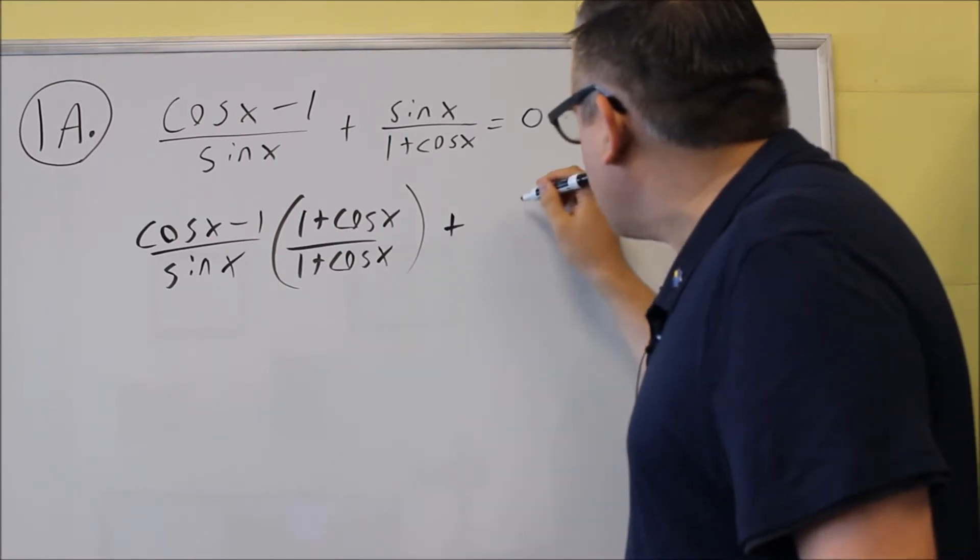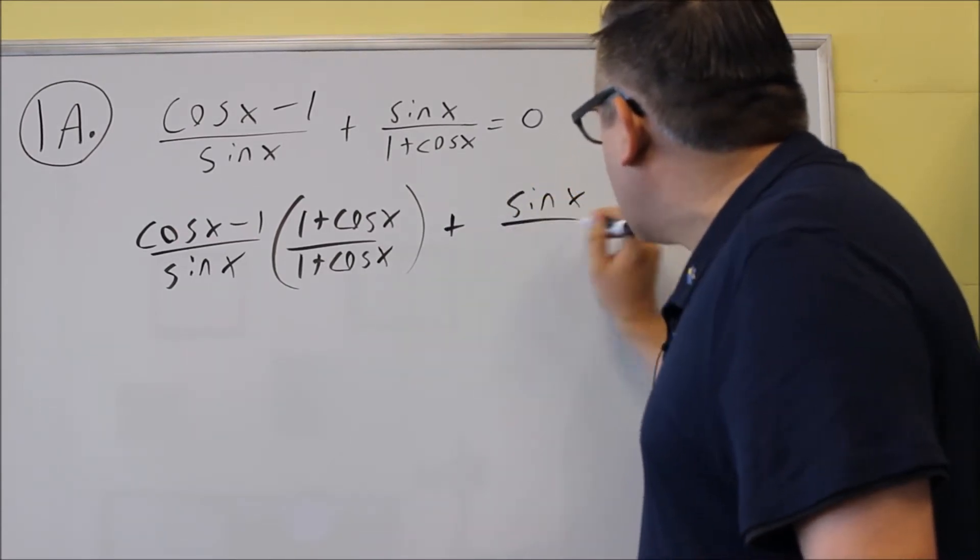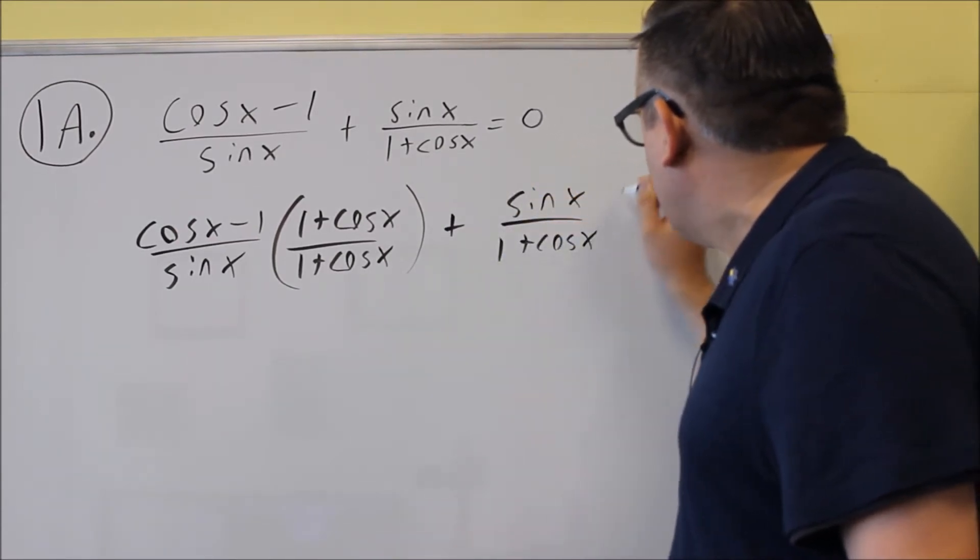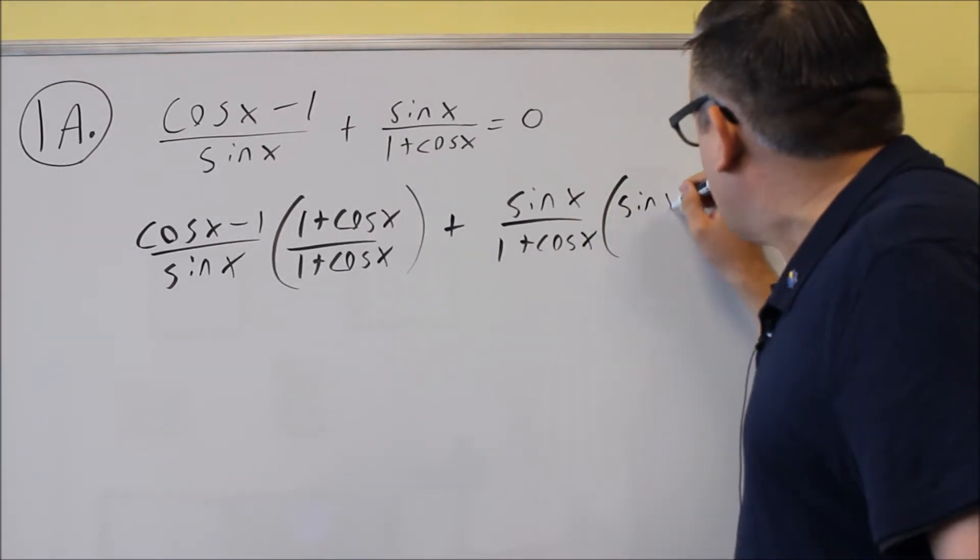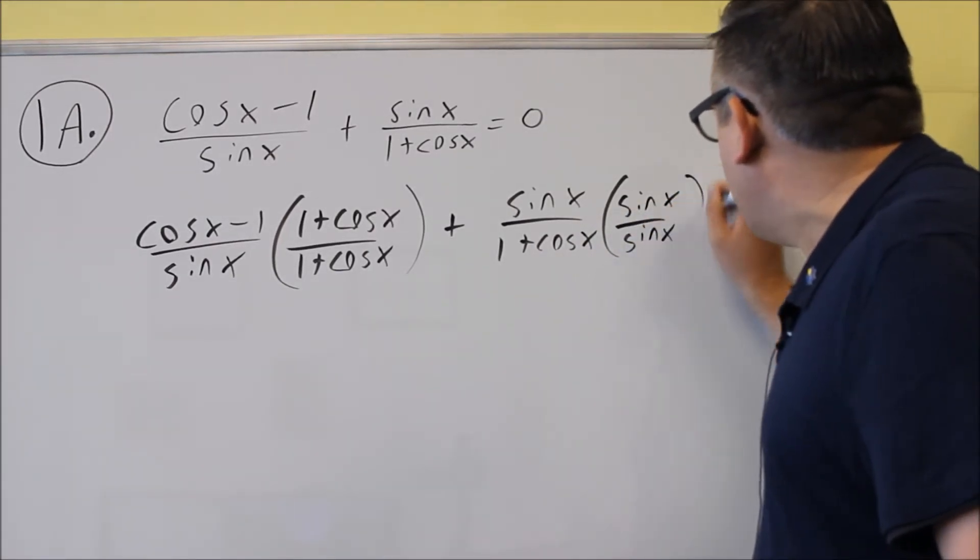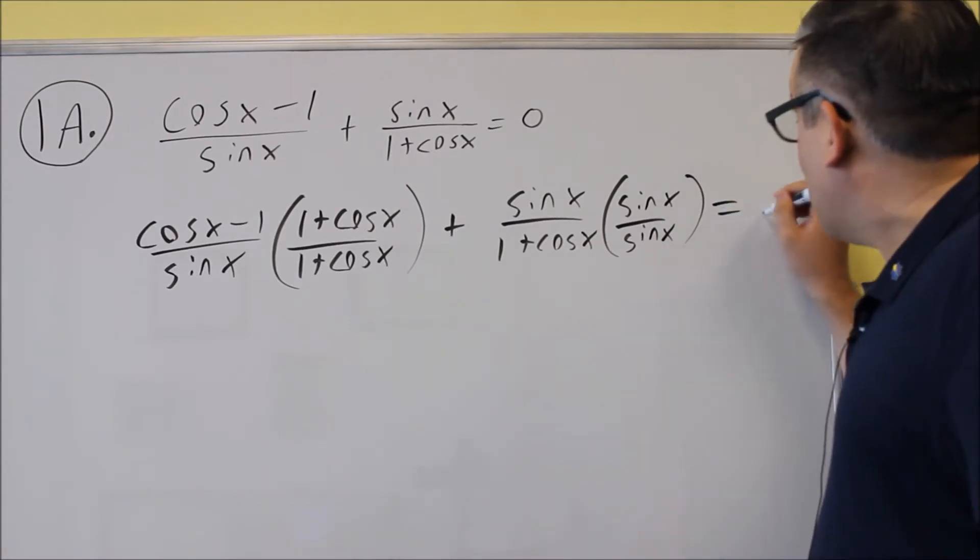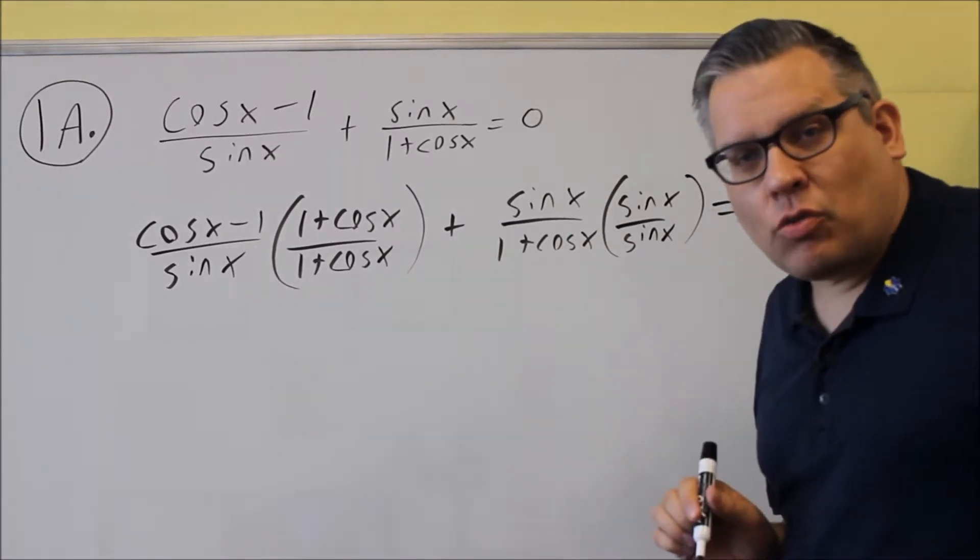The second one has the 1 plus cosine, but it's missing the sine. So we'll multiply top and bottom by sine x. Eventually we want to see that this is going to equal 0.